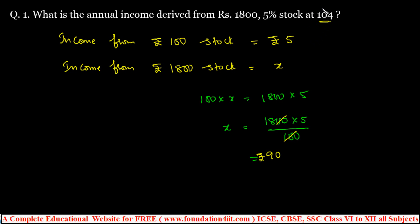Note that '5% stock at 104' — the 104 is the premium, which can be increasing or decreasing. According to this problem, who is asking for annual income from rupees 1800? For 5% stock, for every 100 it's rupees 5, so for 1800 the answer is rupees 90.